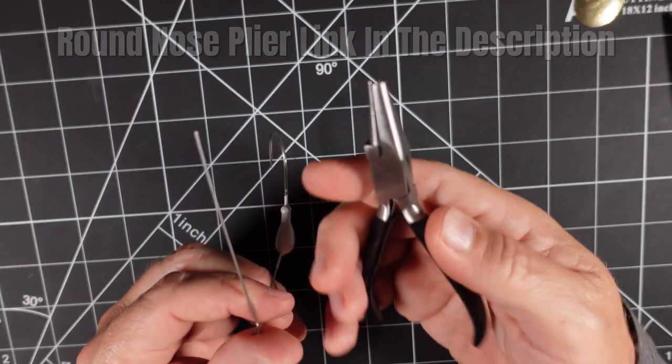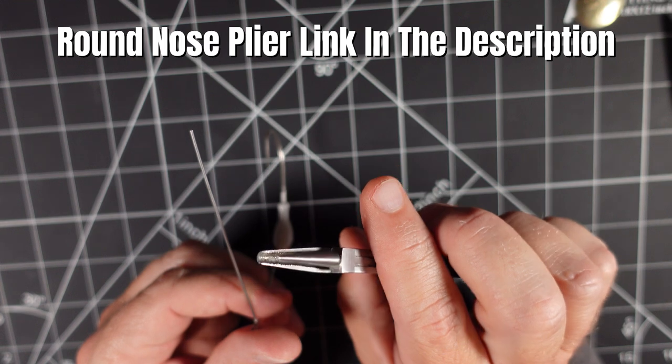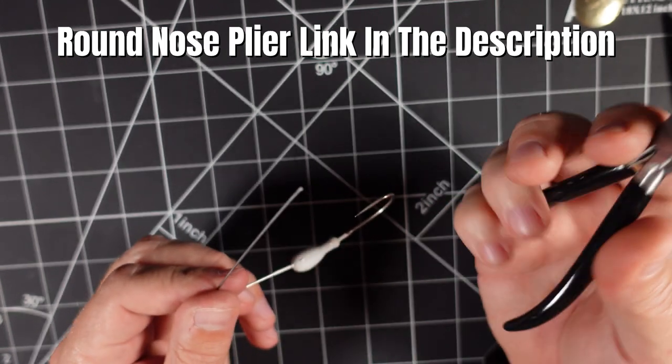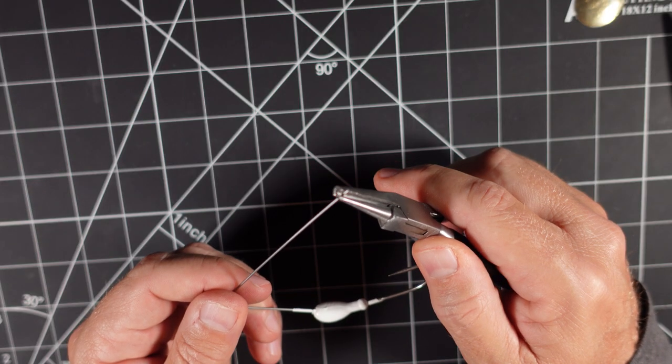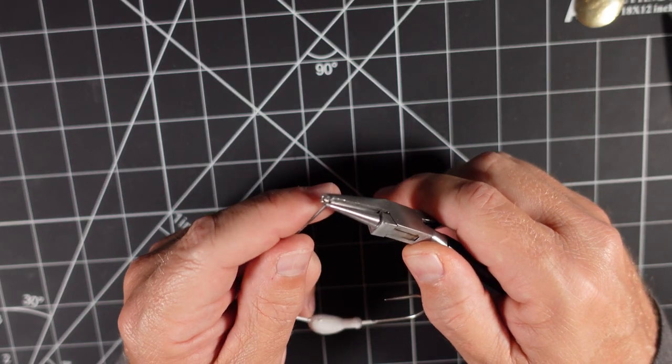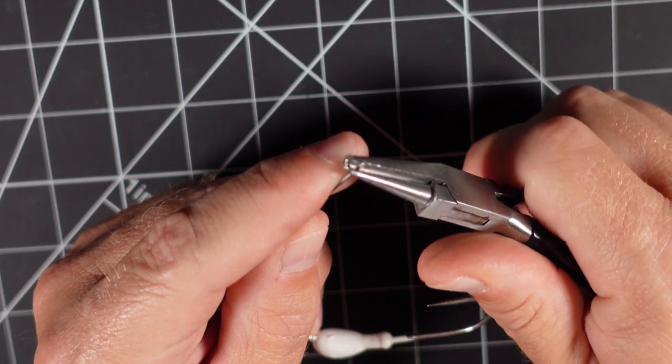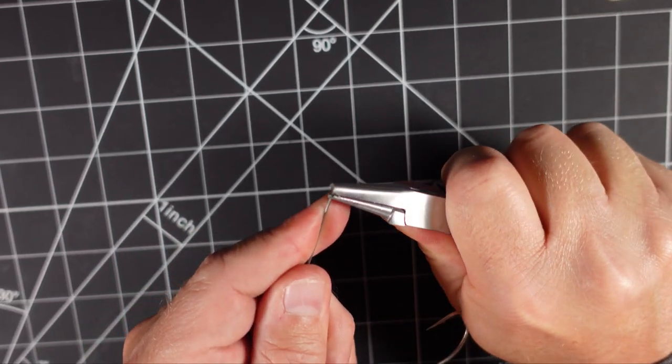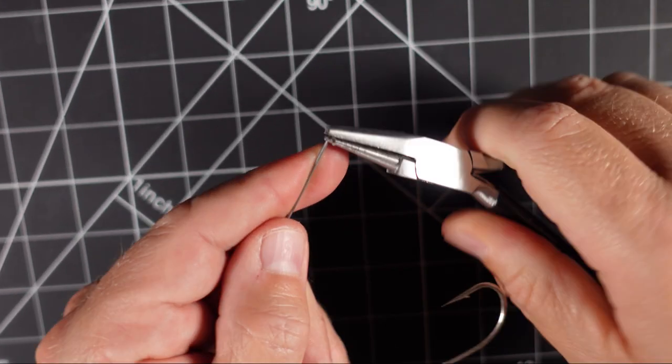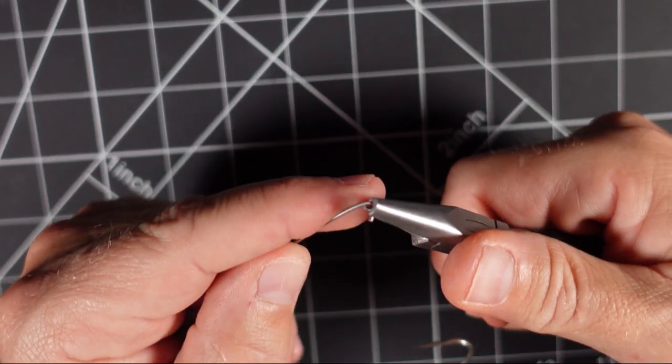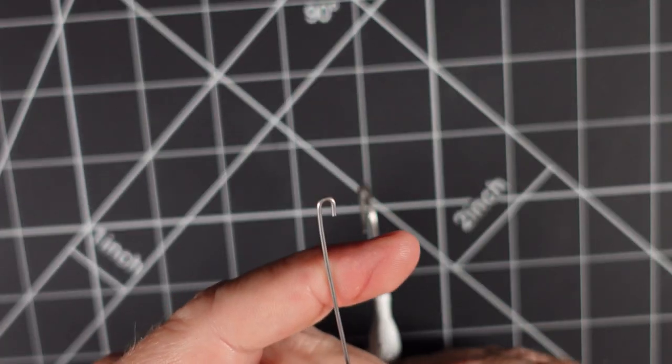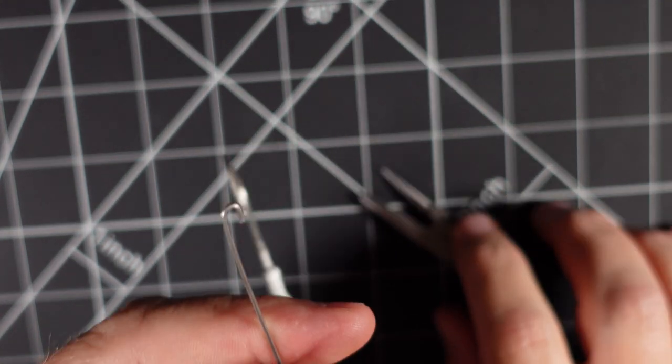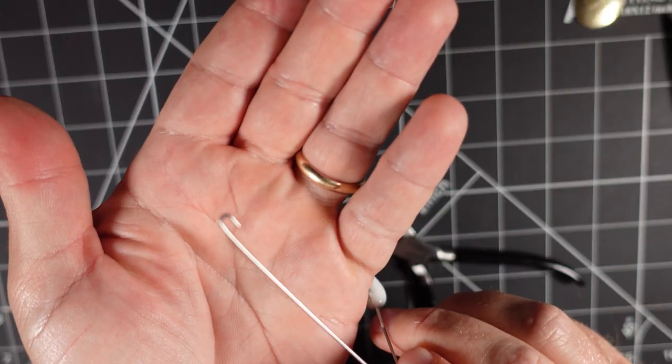To get started we're just going to take our round nose pliers here and we're going to place them at the end of the wire and we're going to try to get as close to that as we can and use the smallest part and we're just going to make up one loop kind of like that right there. You can see that.